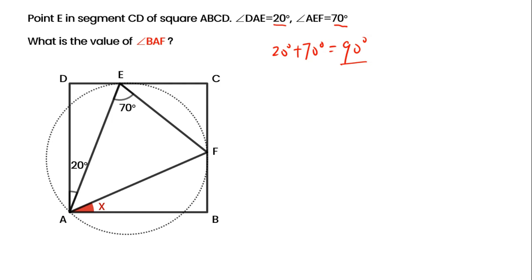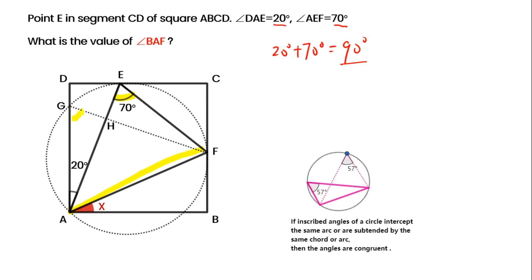Let's make a circle through points A, E, and F, intersecting AD at point G. Then connect FG, intersecting AE at point H. Let's focus on chord AF — it subtends angles AEF and AGF. From the inscribed angle theorem (same chord principle), we get angle AGF is 70 degrees.